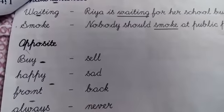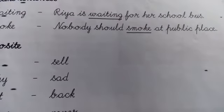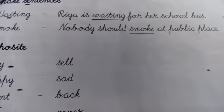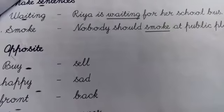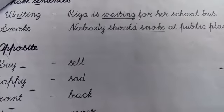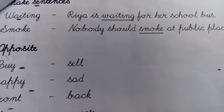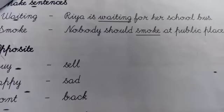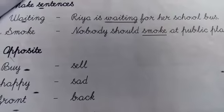Riya is waiting for her school bus. Riya is waiting for her school bus. Waiting means intijary. Sentence kya banane hai. Riya is waiting for her school bus. Riya apni school bus ka intijary kar rahi hai.